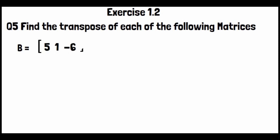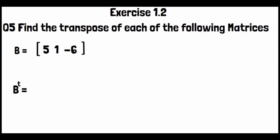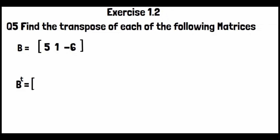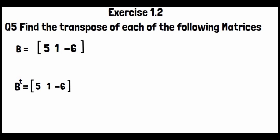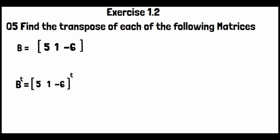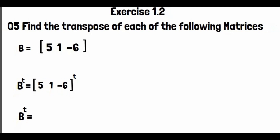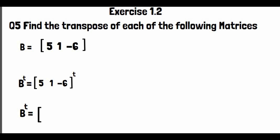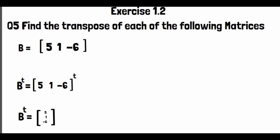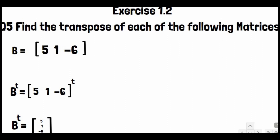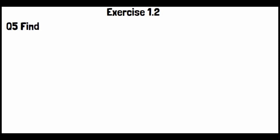Matrix B is [5, 1, -6]. We write B transpose. Since B has one row with entries 5, 1, -6, converting the row to a column gives B^T equal to [5; 1; -6].